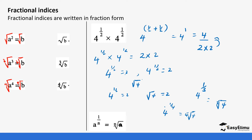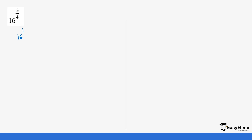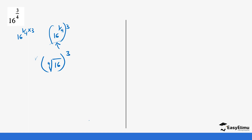Let's do a few examples. If you have 16^(3/4), the first thing we do is separate the fraction. This is the same as 16^(1/4 × 3). We can write that as (16^(1/4))^3. Now 1/4 means the fourth root, so the inner value becomes the fourth root of 16, and we do not forget the outer power of 3.